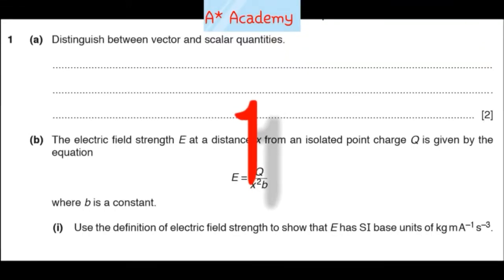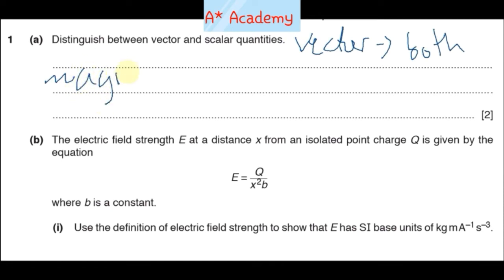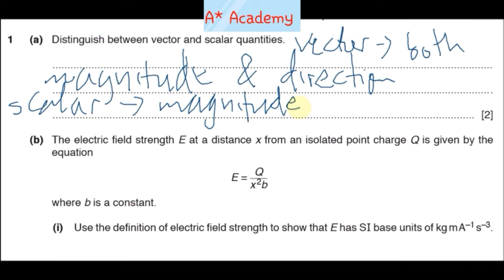Vectors are quantities defined by both magnitude and direction. So we can write: vector is defined by both magnitude and direction, whereas a scalar is defined by magnitude only. Right, so there you have it, you get your two marks just by doing that.